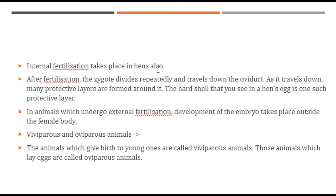Internal fertilization also takes place in hens. After fertilization in hens, the zygote divides and travels down the oviduct. As it travels down, many protective layers are formed around it — the hard shell you see on a hen's egg is one such protective layer. In animals which undergo external fertilization, the development of the embryo takes place outside the female body. Animals which give birth to young ones, like humans, are called viviparous, while those which lay eggs are called oviparous.